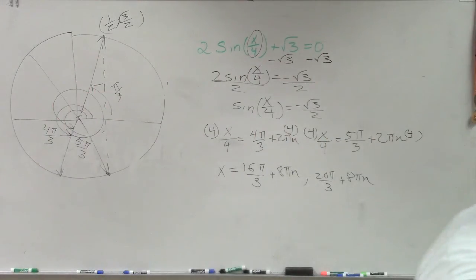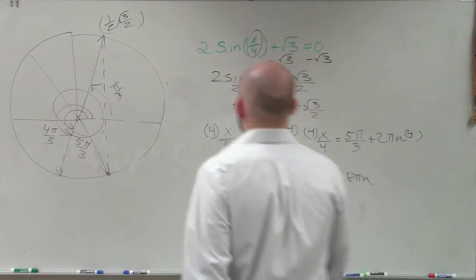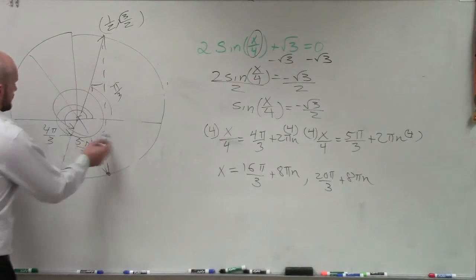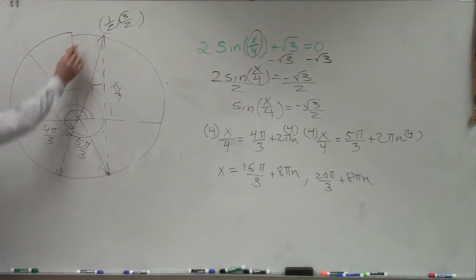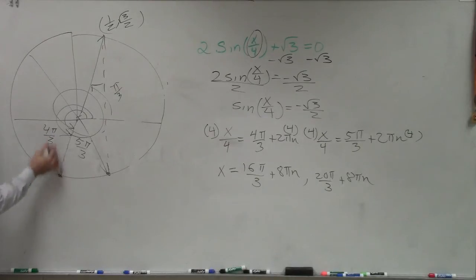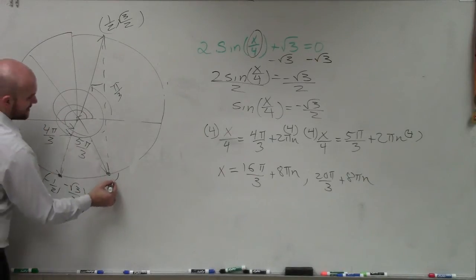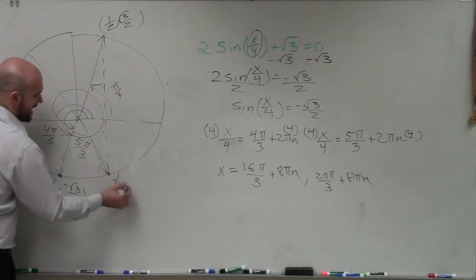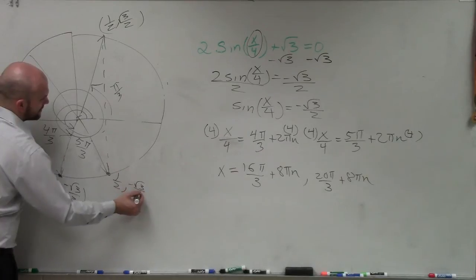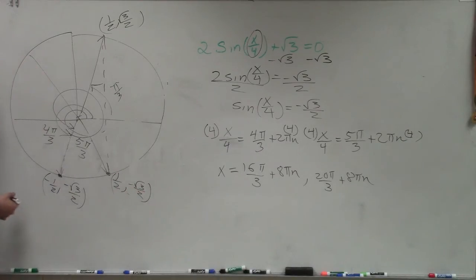Yes? Why is it 4 pi and 5 pi? Do you see that point right there? At the angle 4 pi over 3, my angle is negative 1 half, negative square root of 3 over 2. Now, sine is equal to negative square root of 3 over 2 only at 4 pi over 3. At 5 pi over 3, it's positive 1 half, negative square root of 3 over 2. Do you see the difference?